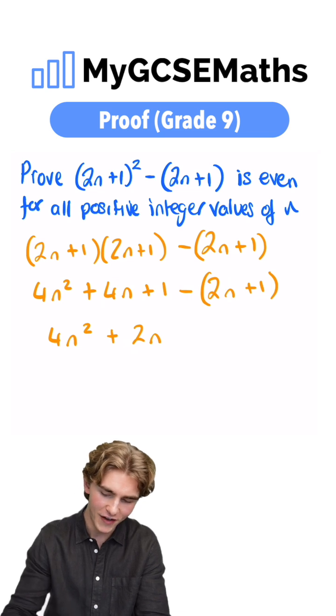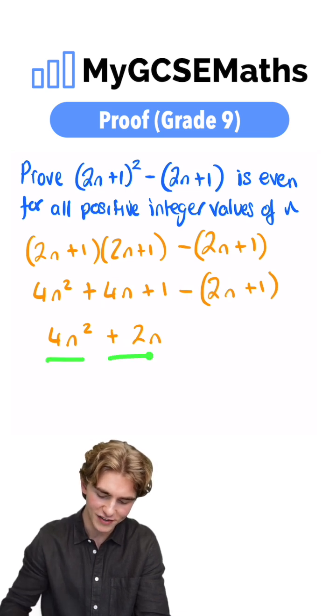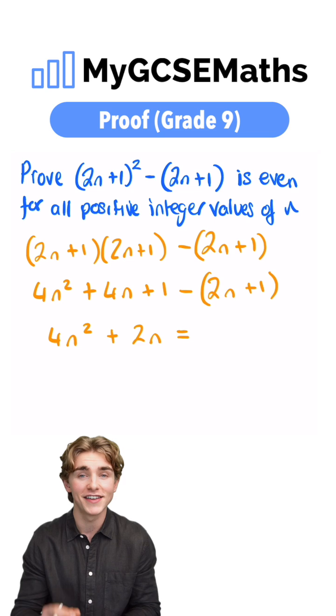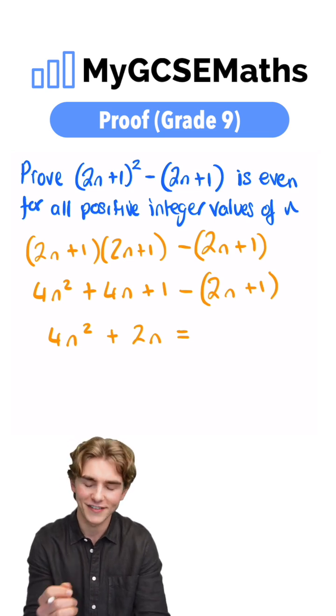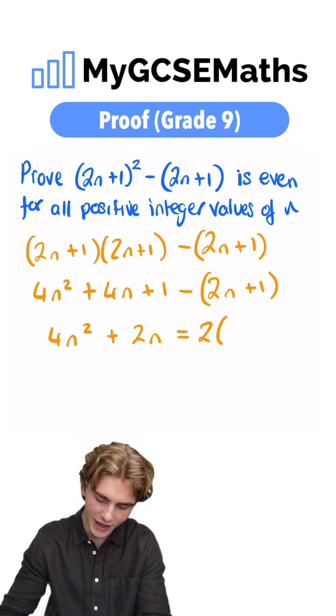Now we have our final expression, 4n squared plus 2n. We can factorize this, pulling out a factor of 2, and that's going to show that this is an even number. So we have 2 times by 2n squared plus n.